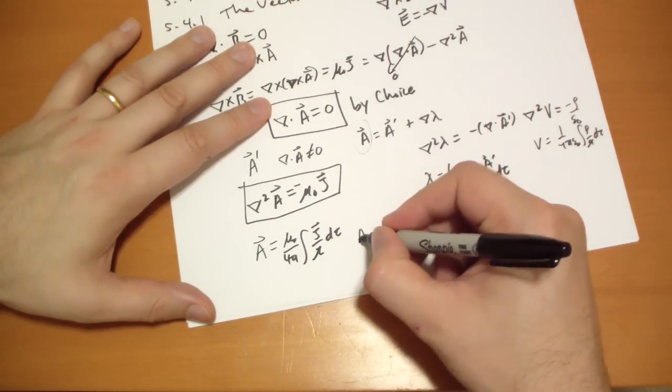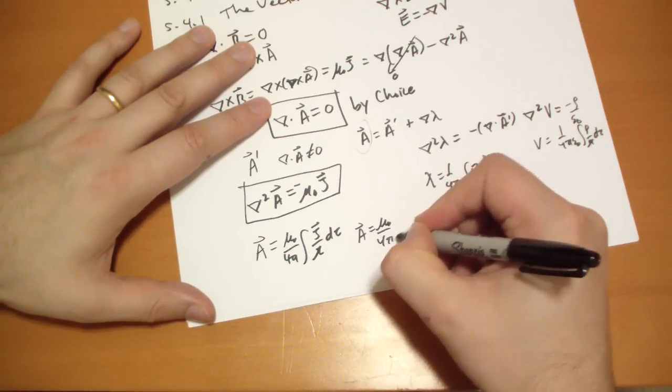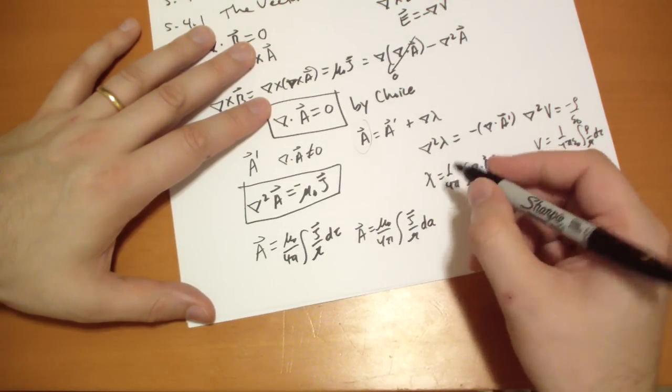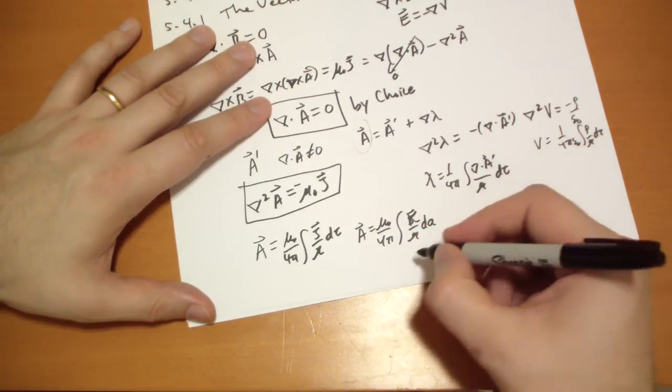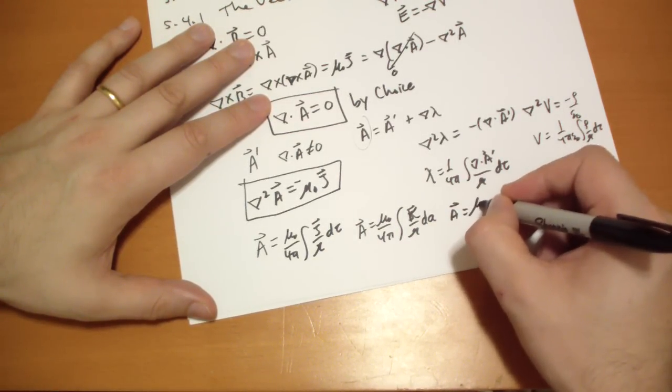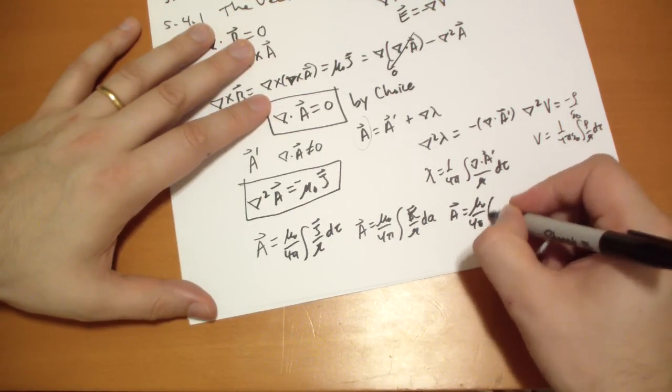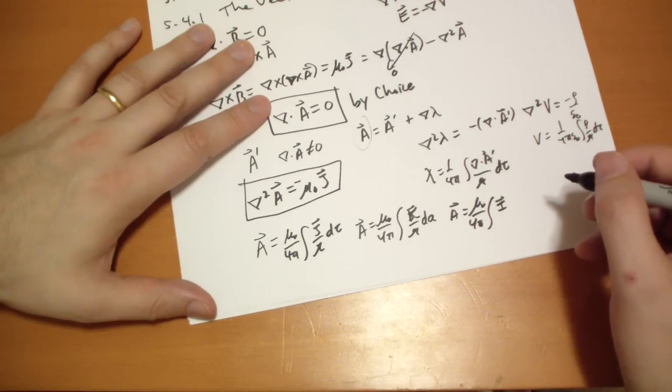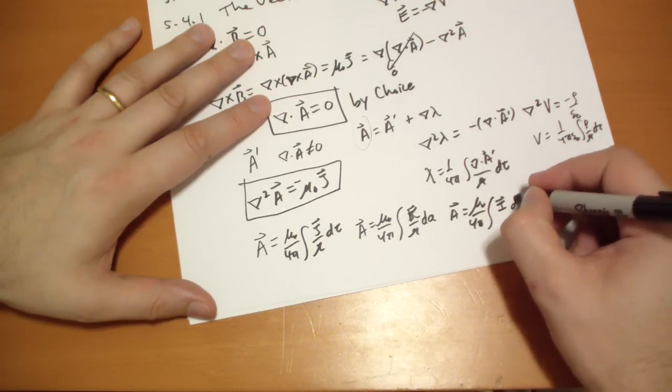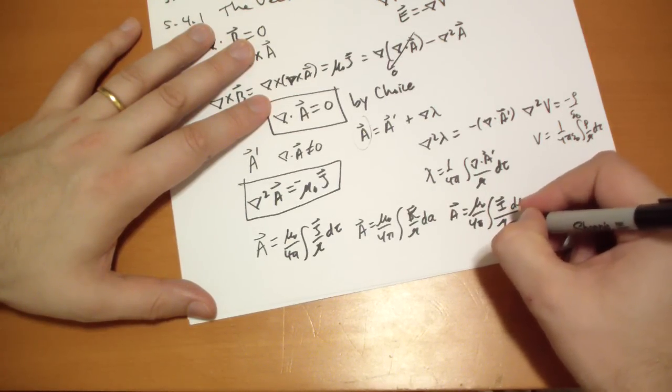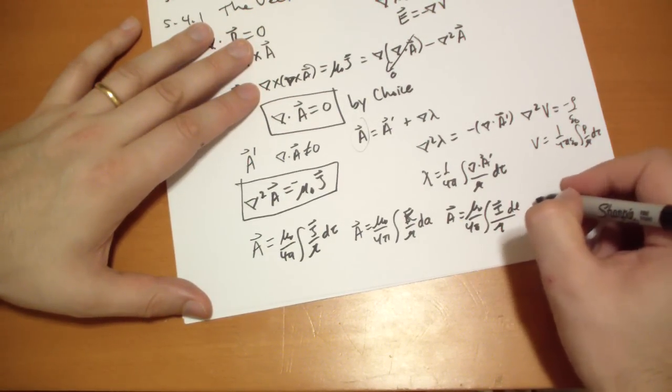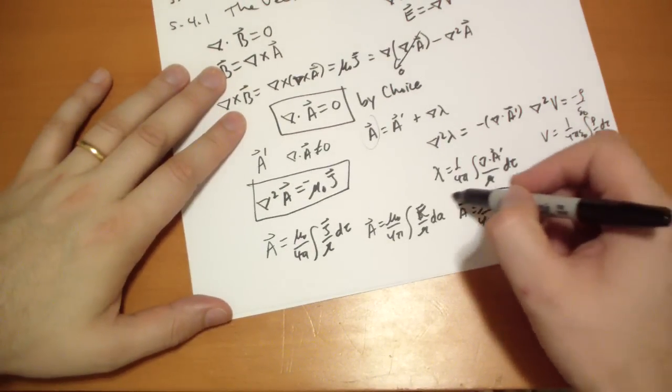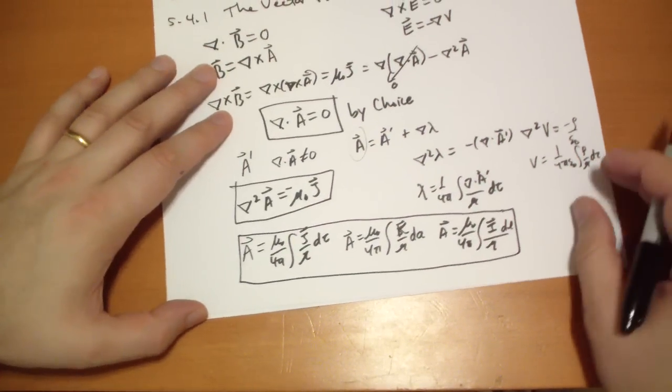And if you want to do this for surface currents, it's similar. And for line currents, it's the integral of i dl over r. But, you know, the i is probably constant. So you can just pull that out and just use dl for the length there. So that is how we can calculate the A vector.